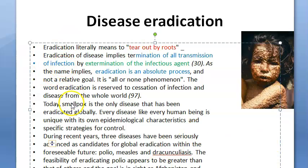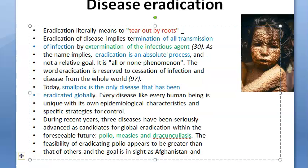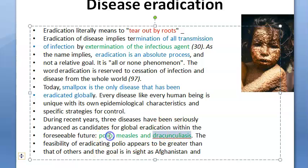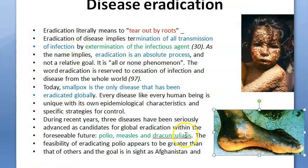The only disease that is eradicated globally — per the textbook — is smallpox, caused by the variola virus. However, dracunculiasis (guinea worm) also appears to have been eradicated, and rinderpest is also mentioned as eradicated. In the future, we may be able to eradicate polio, measles, etc. So just remember: eradication means tear it out by the roots, extermination of the infectious agent, termination of all transmission — and the key example is smallpox.